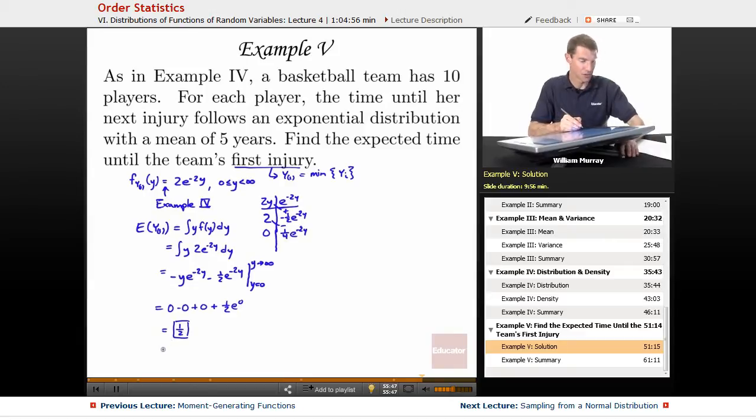What that means is that if you're this basketball team coach and you're wondering how long is it going to be until I have an injury, see an injury in one of my players, the expected time - of course you hope not to injure anyone ever - but the expected time until your first player gets injured is one half a year, six months.